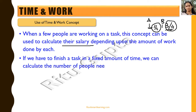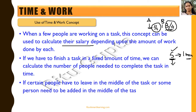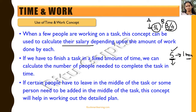If we have to finish a task in a fixed amount of time, we can find out how many more people will be needed. Suppose five people are already working on a big task that will take one month. If I want to finish it in 15 days, I need to find out how many more people of the same efficiency to add. If certain people leave in the middle or need to be added mid-task, this concept helps in working out the detailed plan.